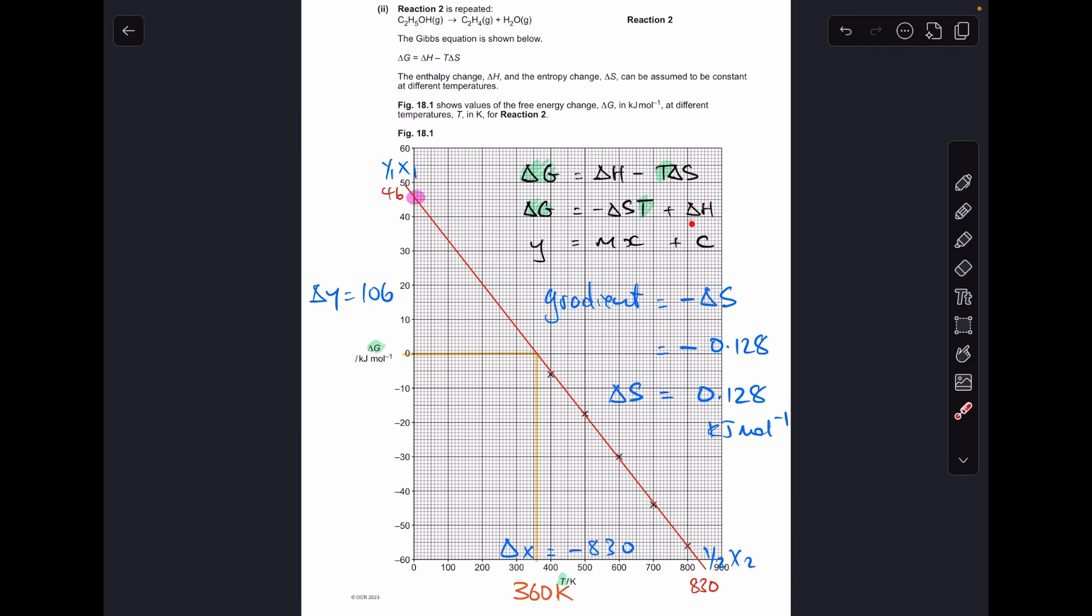And finally the enthalpy change is the Y intercept, so I've already highlighted it there. So my answer would be plus 46 kilojoules per mole.